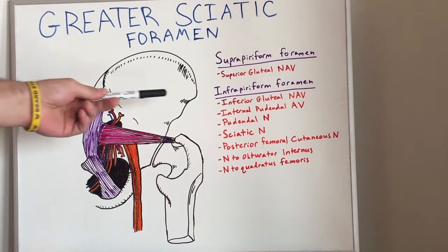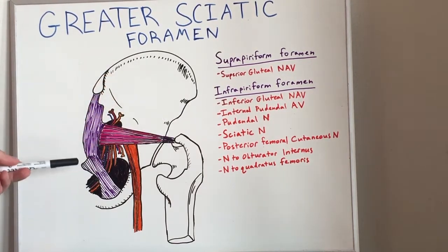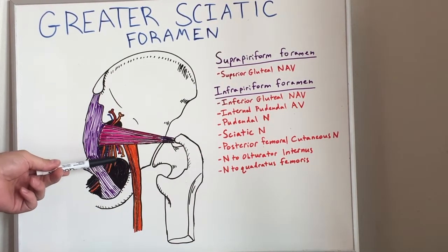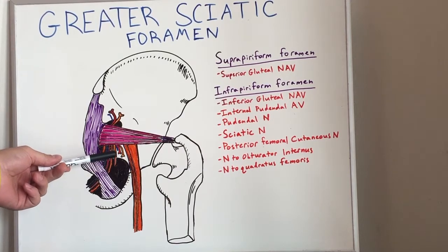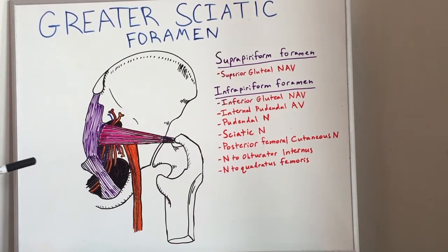In the infrapiriform foramen, we have a wide variety of structures coming through here. We have the inferior gluteal nerve, artery, and vein, and this supplies the gluteus maximus muscle.